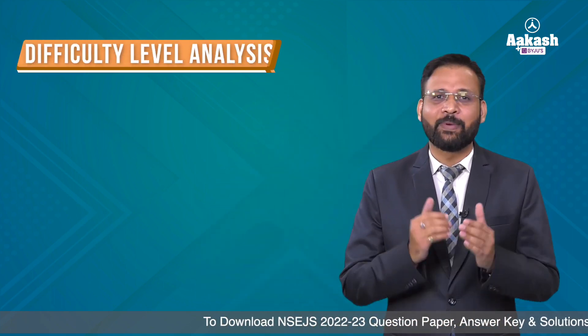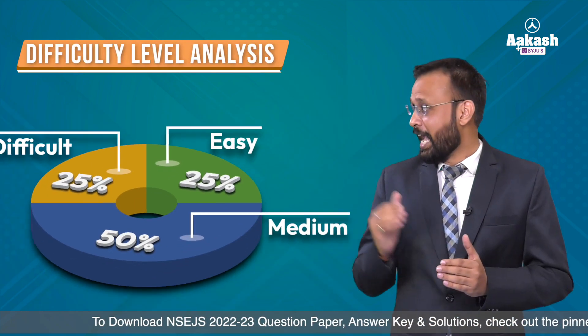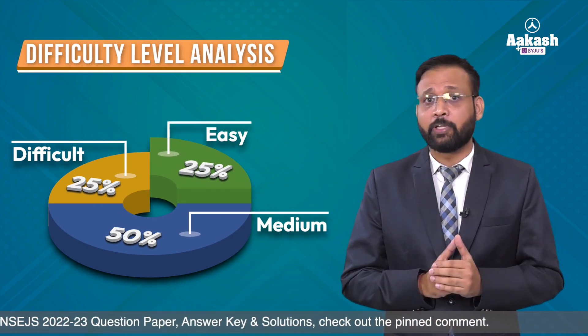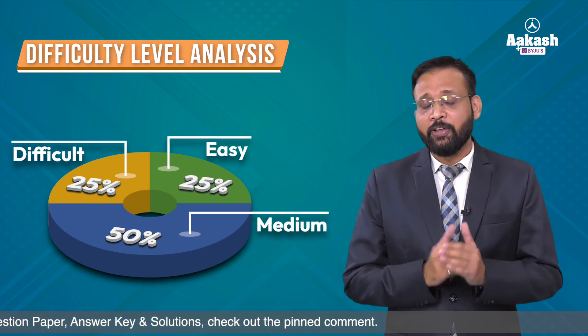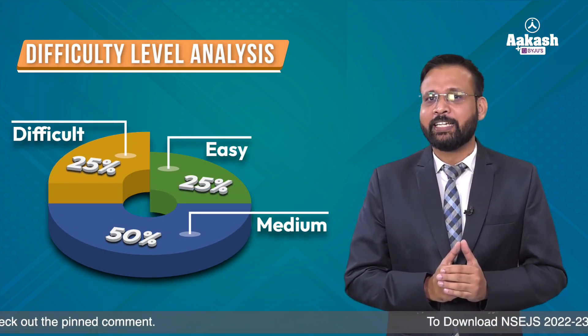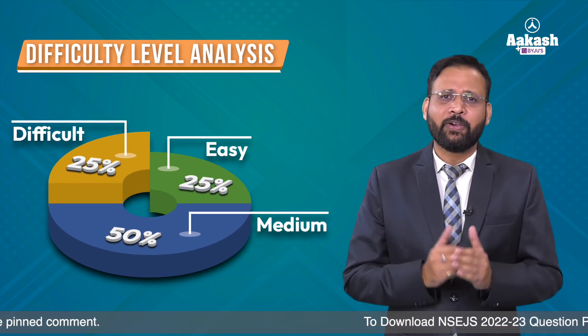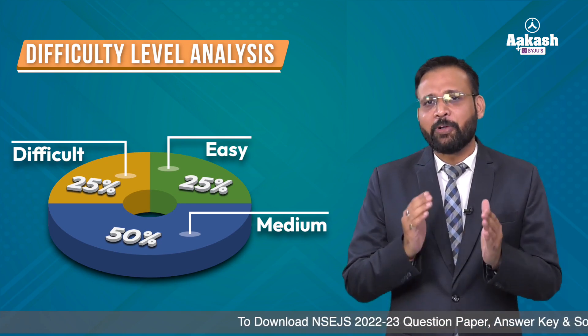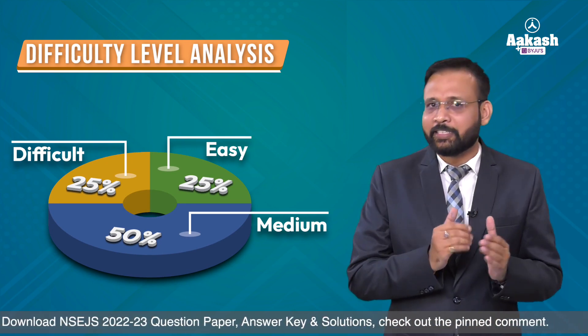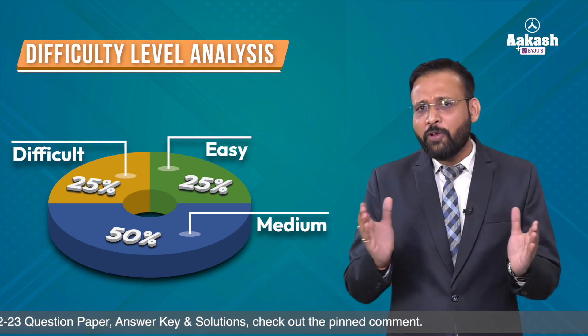There were 20 questions in the physics section. Looking at the difficulty level of the physics paper: 25 percent of the paper was on the easier side, 50 percent was moderate, and 25 percent was difficult. The difficult questions were from Class 11th and 12th chapters.